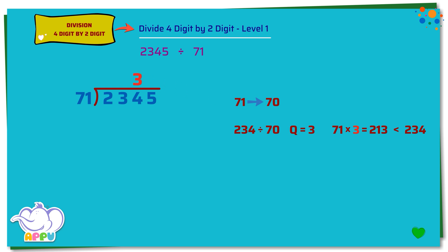Step 2. We multiply 71 and 3, we get 213. Step 3. We subtract 234 minus 213 equals 21.